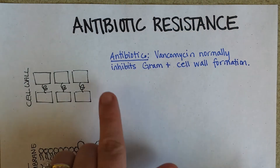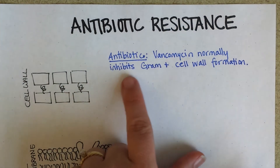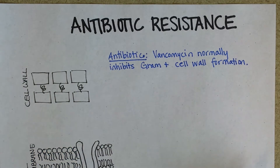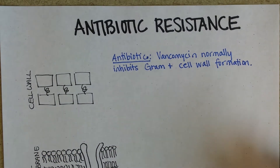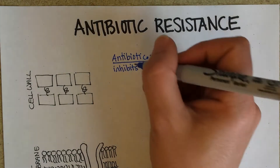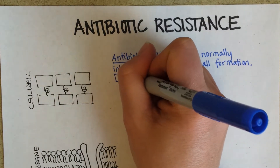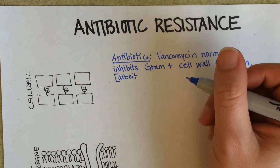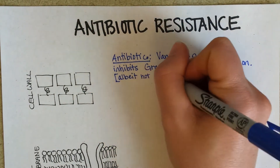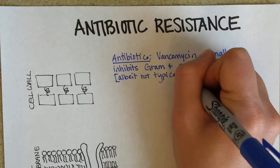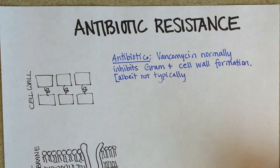Vancomycin normally inhibits gram-positive cell wall formation, so it could be a good candidate to use against a gram-positive infection. Interestingly though, although we think of it as a very powerful antibiotic, it actually doesn't work as well as penicillin — assuming the bacteria is not resistant.